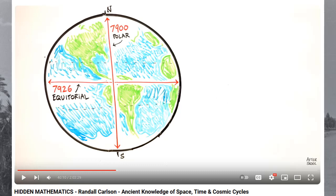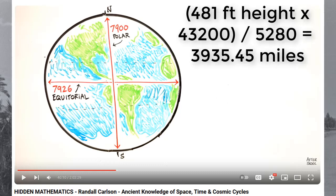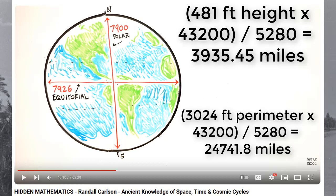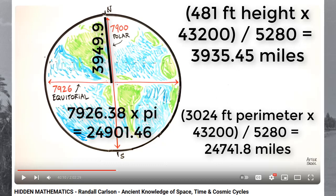Now, let's look at his math. We're going to switch to miles because that's what he uses. If we increase the dimensions of the pyramid by 43,200, we get 3,935.45 miles and a base perimeter of 24,741.8 miles. This is a very impressive estimate, but there is deviation here from the Earth, which has a polar radius of about 3,950 miles, about 15 miles greater, and the perimeter of the equator is 24,901.5 miles, about 150 miles greater.